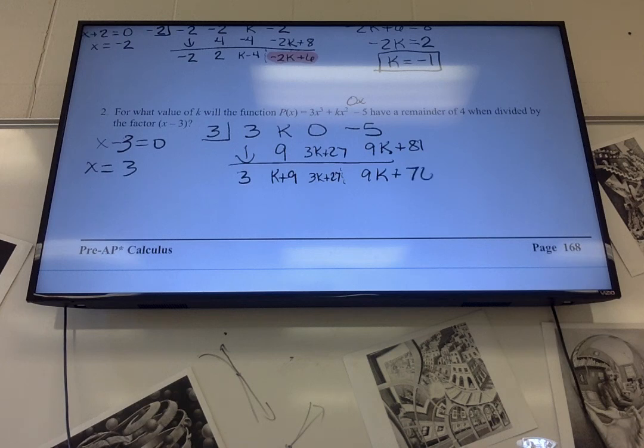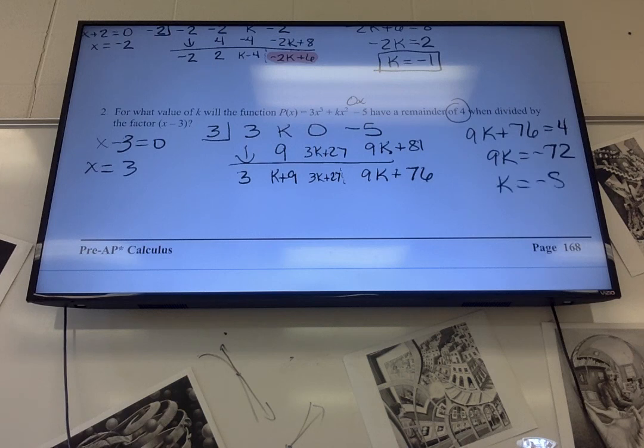Then I'm supposed to get a remainder of 4. So 9k plus 76 equals 4. Let's subtract 76. So I get negative 72. Divide by 9. I get k is negative 8. Is that what I had or did I play? I had negative 8. Okay.